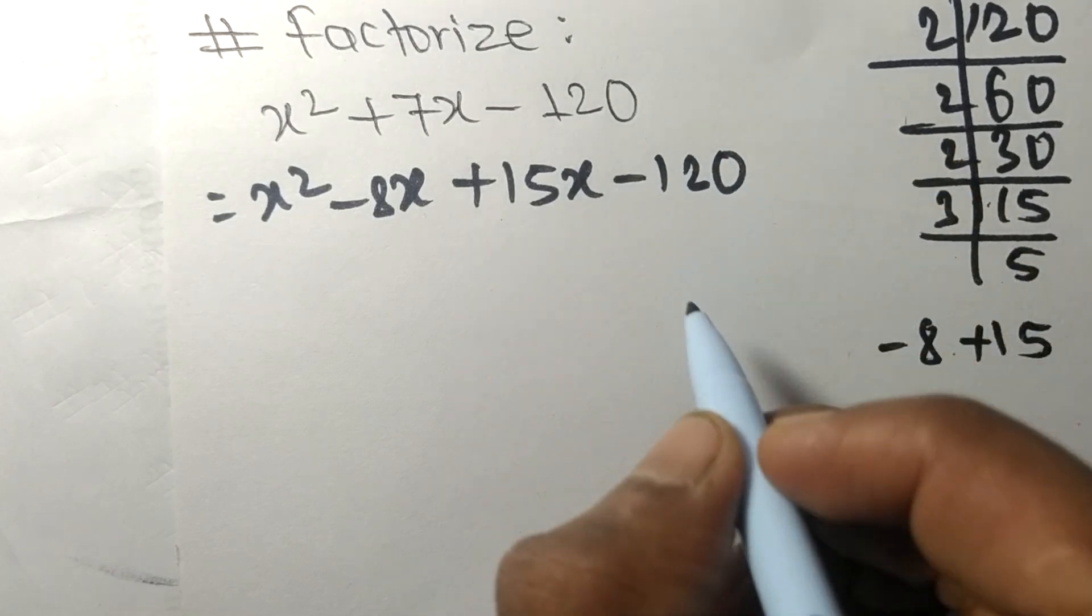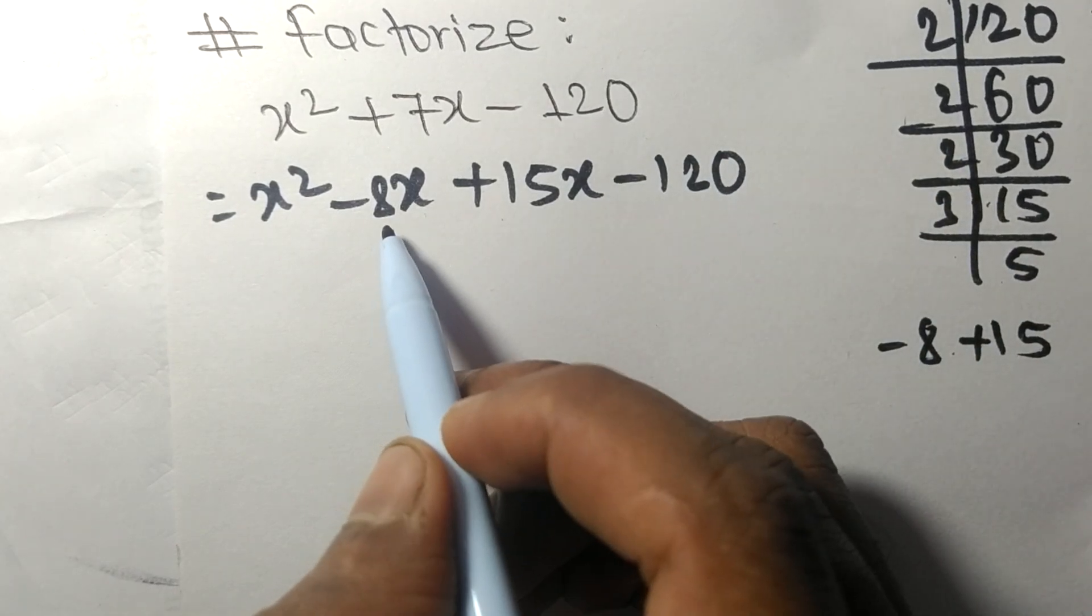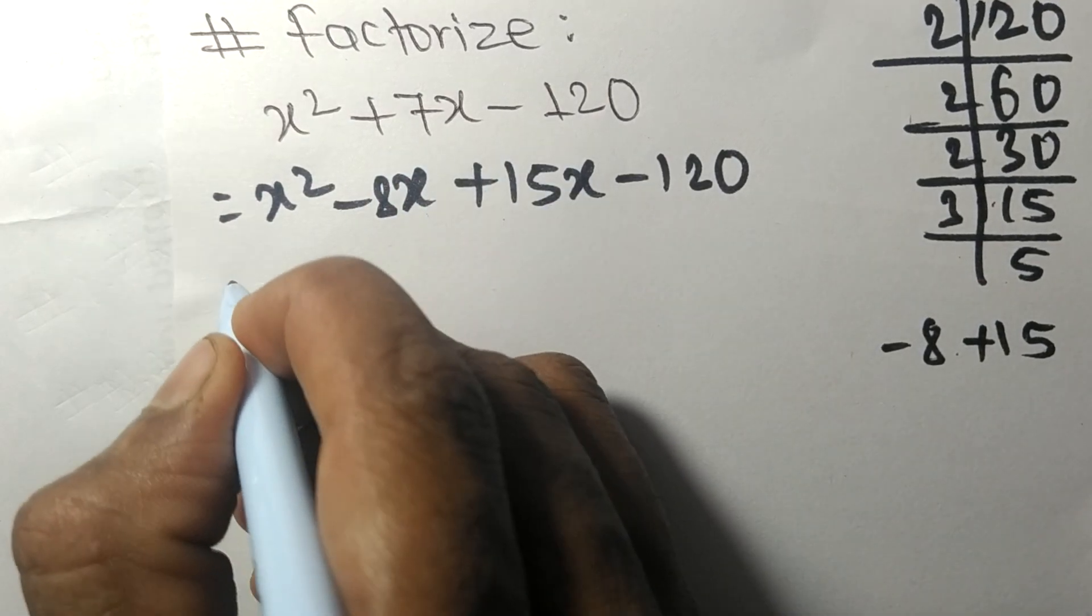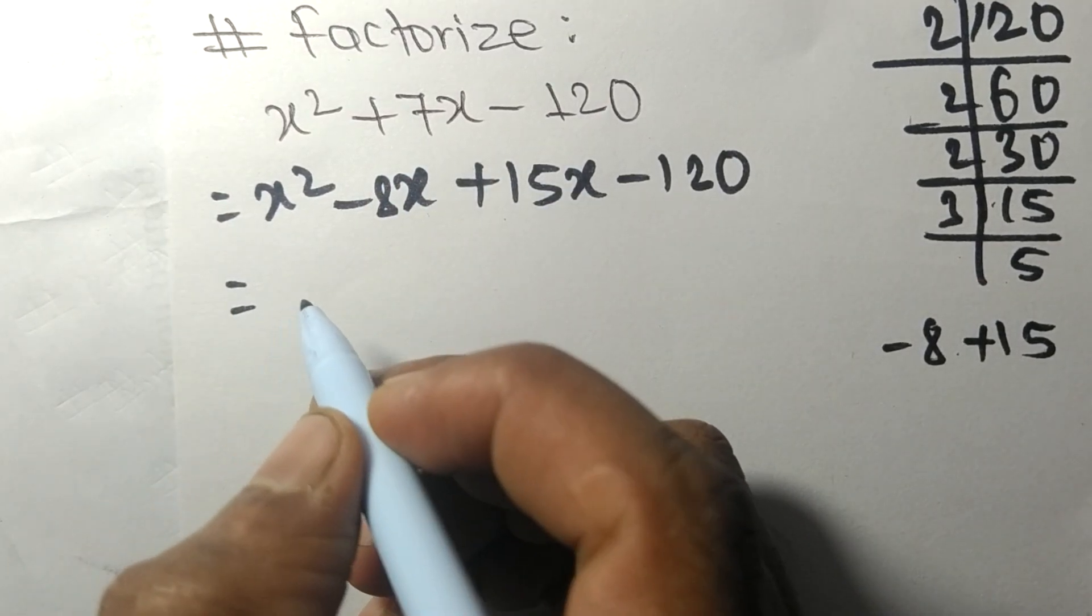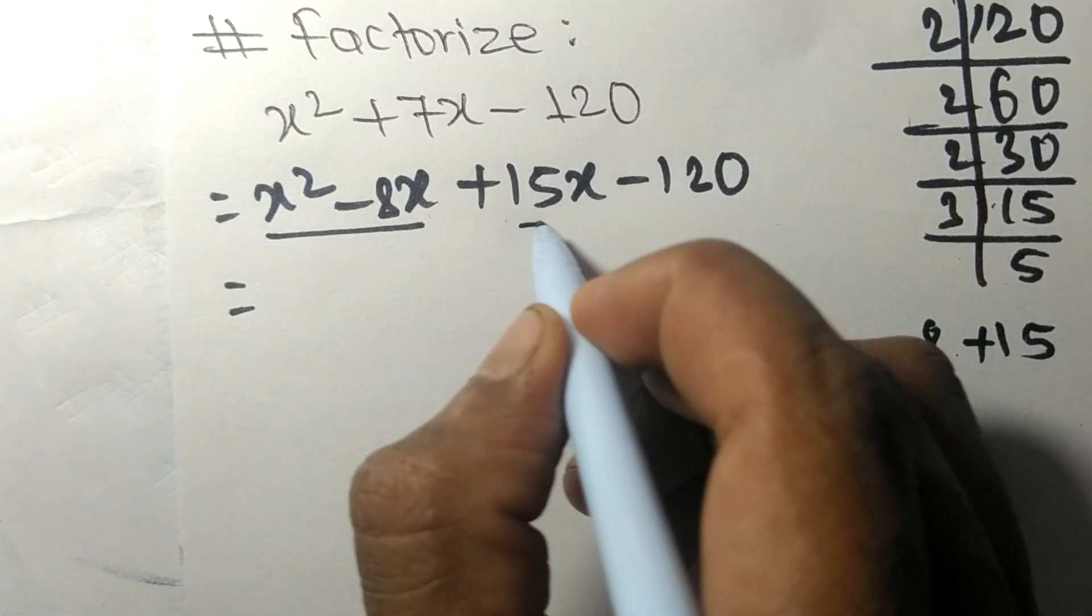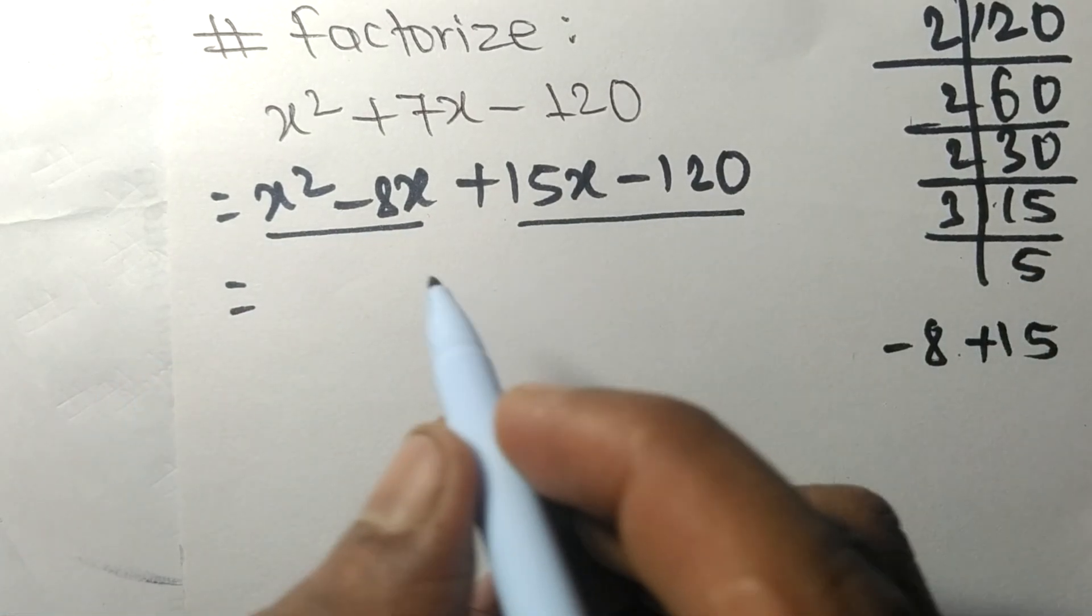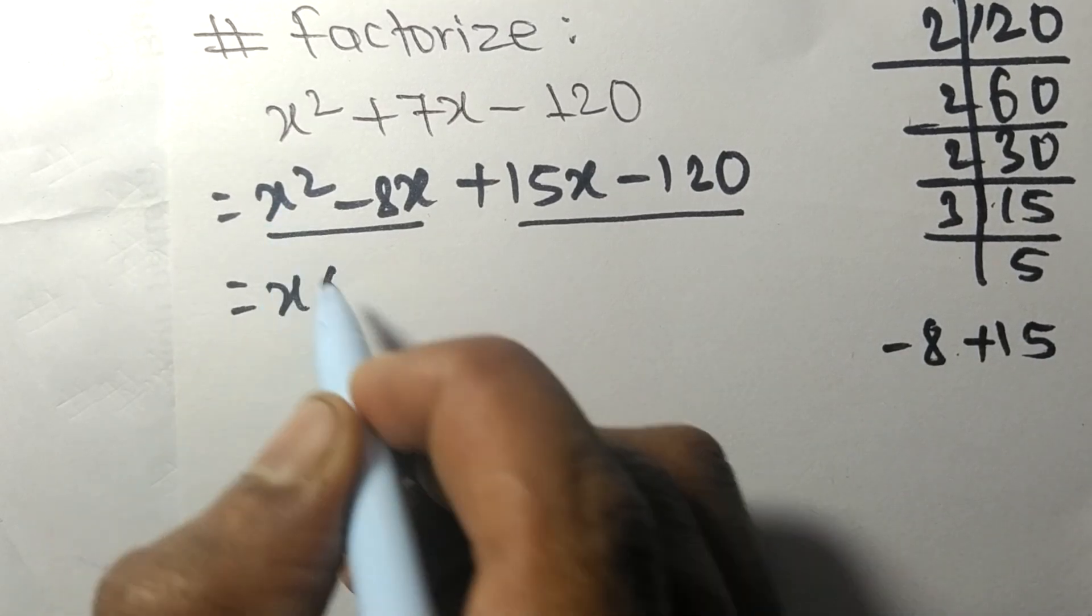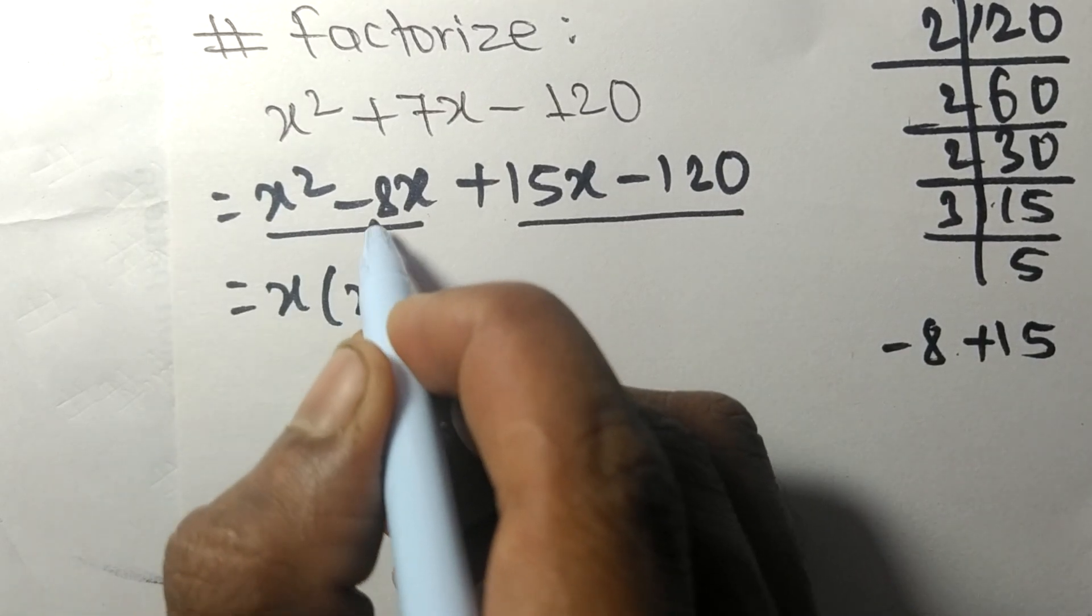Minus 8x plus 15x means plus 7x. Now we find the common factor in the first two terms and the last two terms. In the first, the common is x, so the remainder is x minus 8.